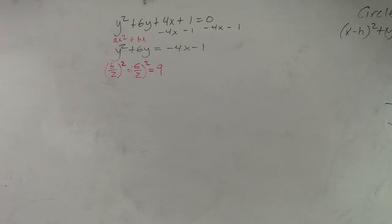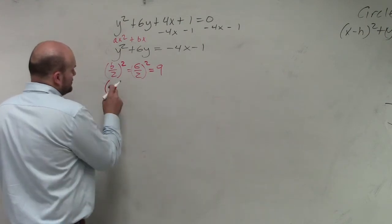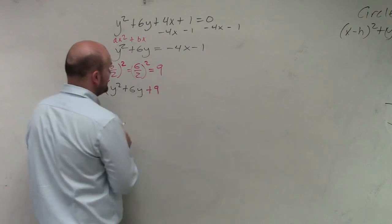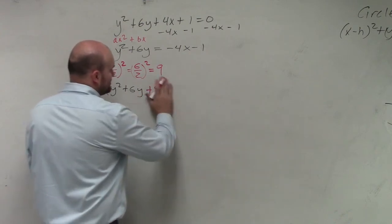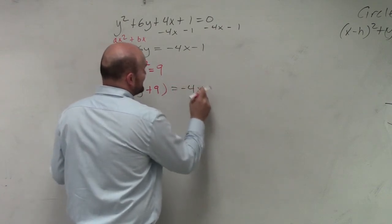So now you add that 9 to both sides. So we're going to create some parentheses. So I have y squared plus 6y plus 9. You guys getting flashbacks to August when we first went over this? I think that's how long ago it was.